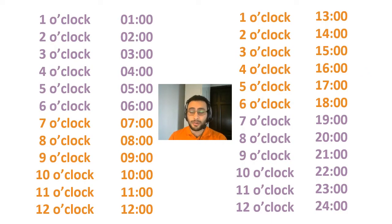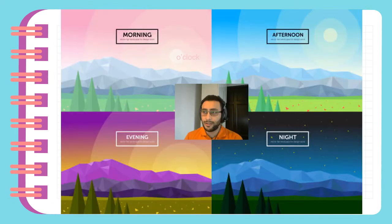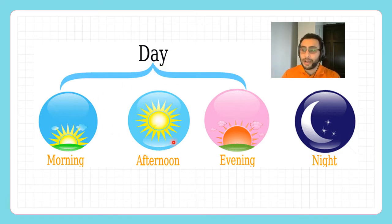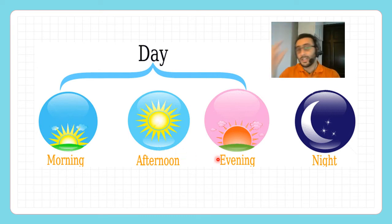Actually, day and nighttime are not the only ones — we're going to cut it into four pieces: morning, afternoon, evening, and night. In the daytime, from 6 until 18, we have morning, afternoon, and evening. Morning is when the sun is coming out. Afternoon is when the sun is on top of us — it's very hot. And evening is when the sun is going down. When the sun is not there, we call it night.